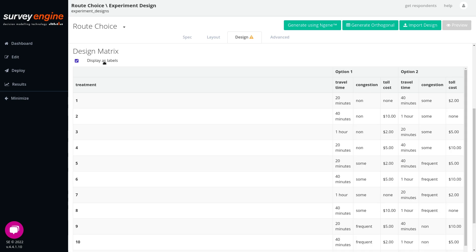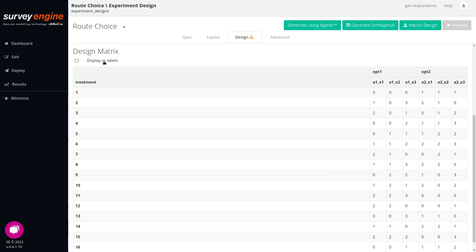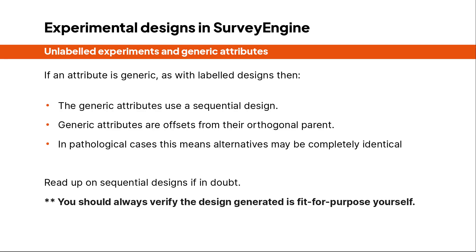You can see these levels as labels by clicking the 'Display as Labels' checkbox. If your experiment contains generic attributes, then Survey Engine will use a sequential orthogonal design. This means that orthogonality only exists within an alternative, or specifically for the non-generic attributes. Generic attributes are simply offset from the first by a fixed random amount.